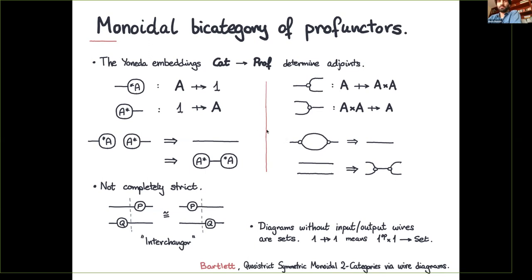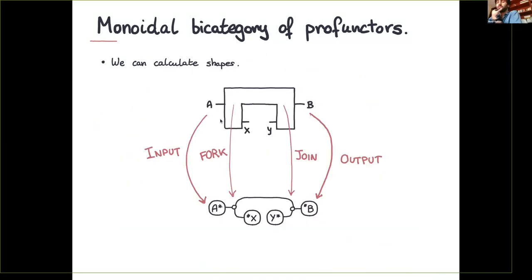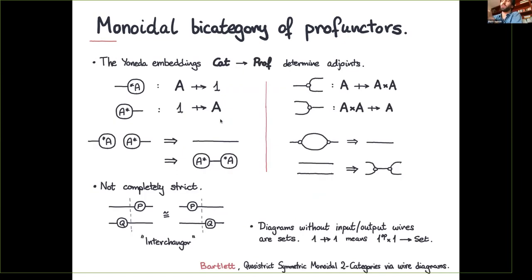There are two unit embeddings, both monoidal pseudofunctors: one embeds every functor as the representable profunctor, the other as the co-representable profunctor. The images of these two unit embeddings are adjoints to each other. For example, every time we have an object a, we can consider the representable profunctor and the co-representable profunctor, and each time they appear together they can fuse into a wire — this is precisely composition along a.